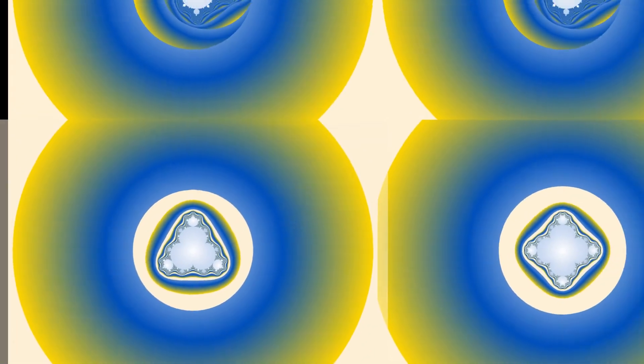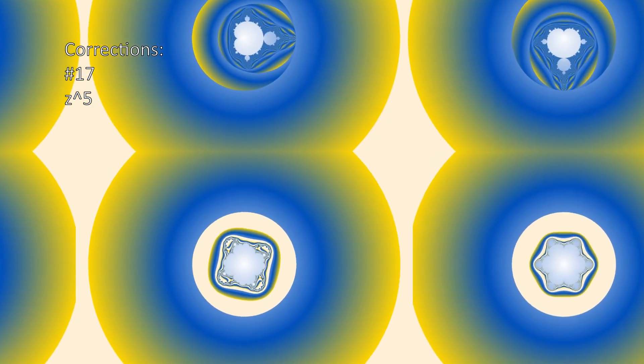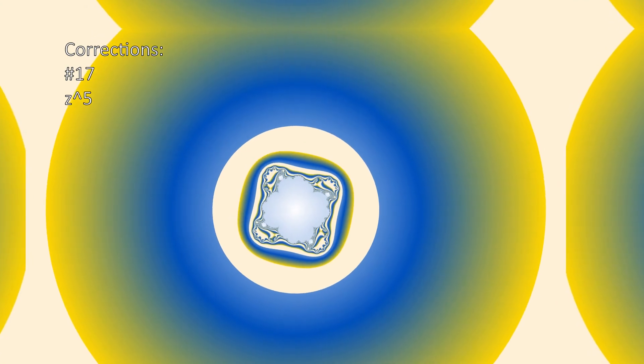Number 15 is z cubed, rotated by 90 degrees. The 16th is z to the power of 4, rotated by 45 degrees.